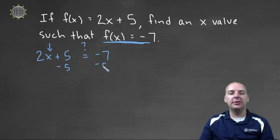So two x equals negative twelve. To solve for x, we'll divide both sides by two. And so x would equal negative six.